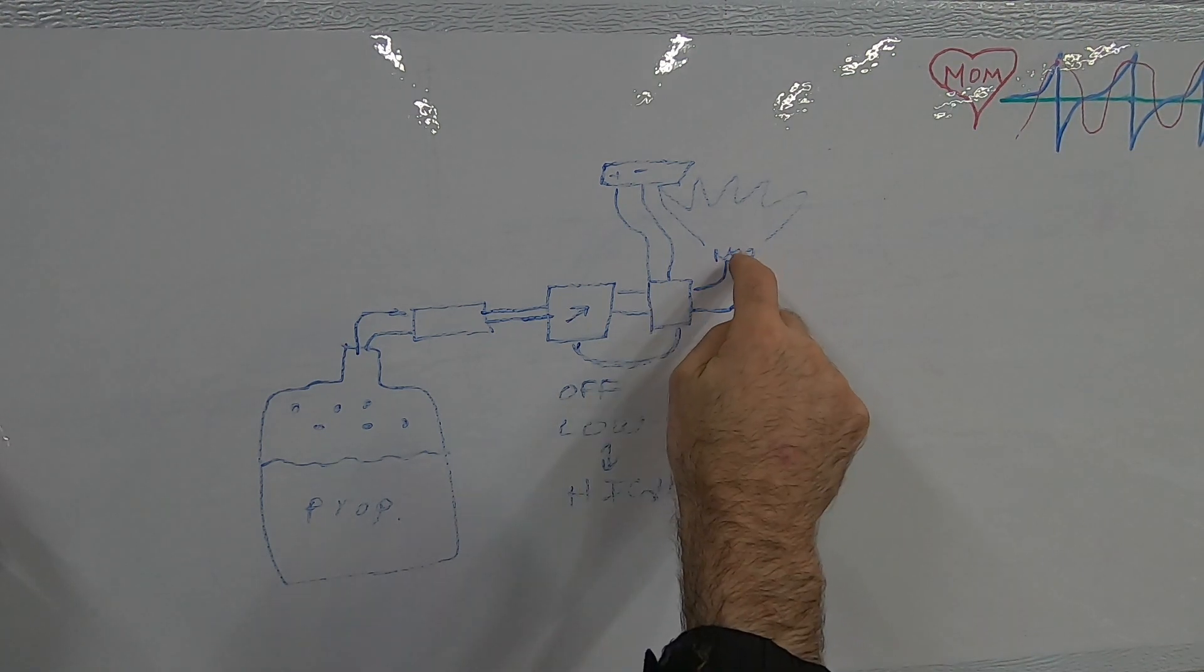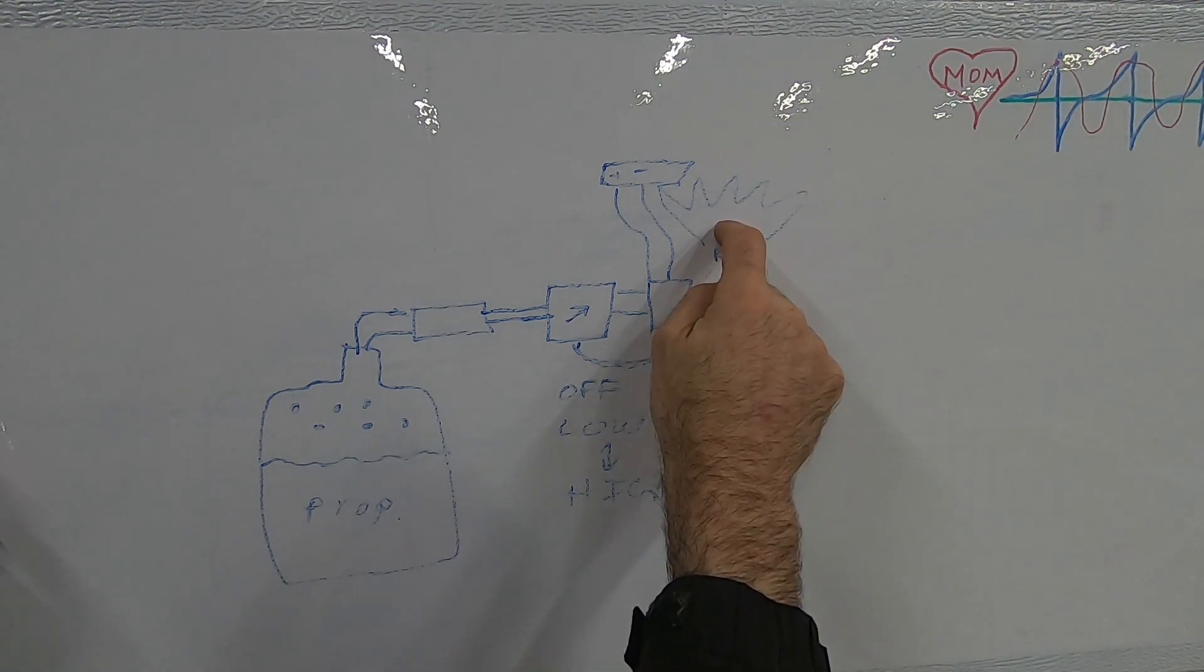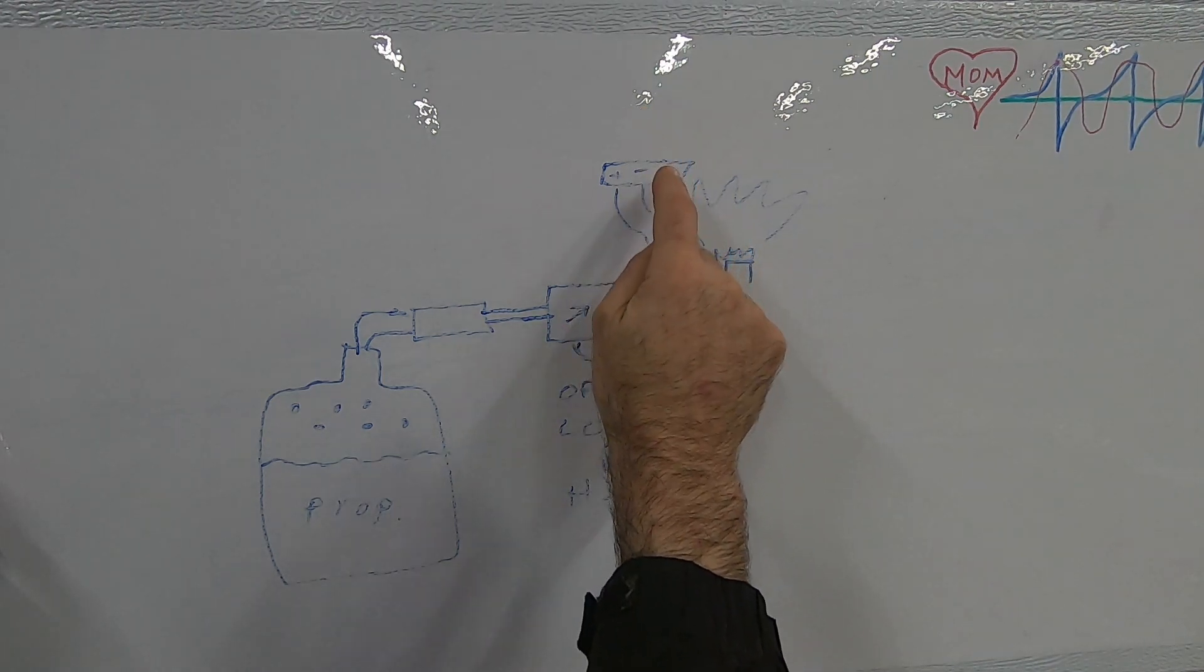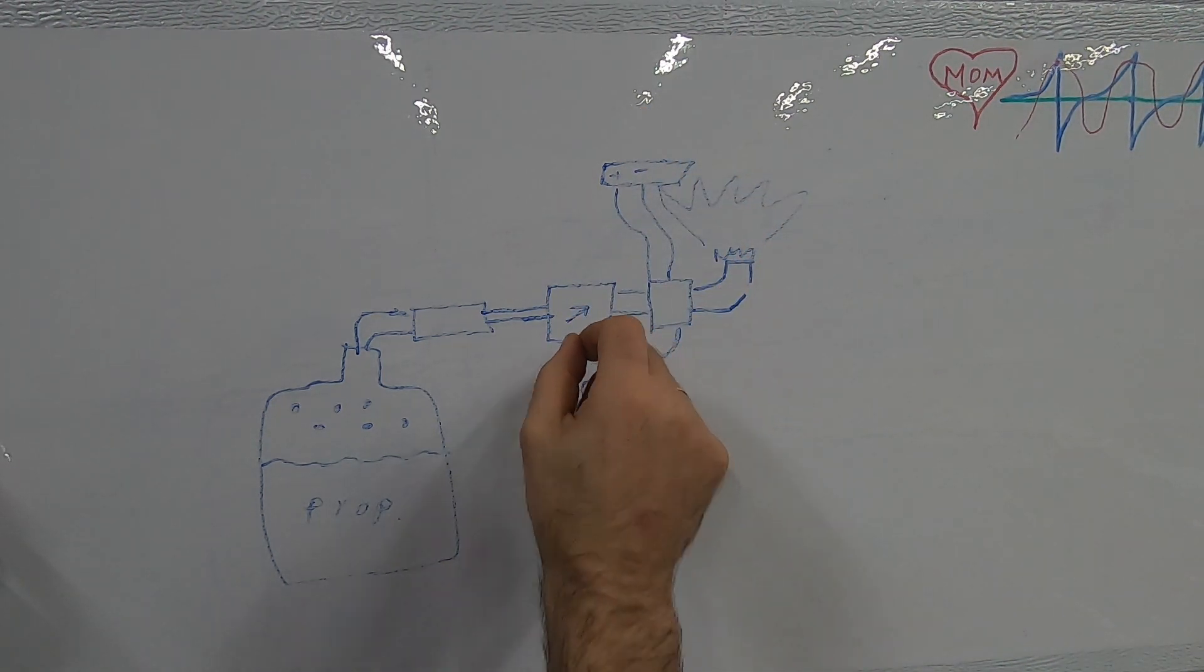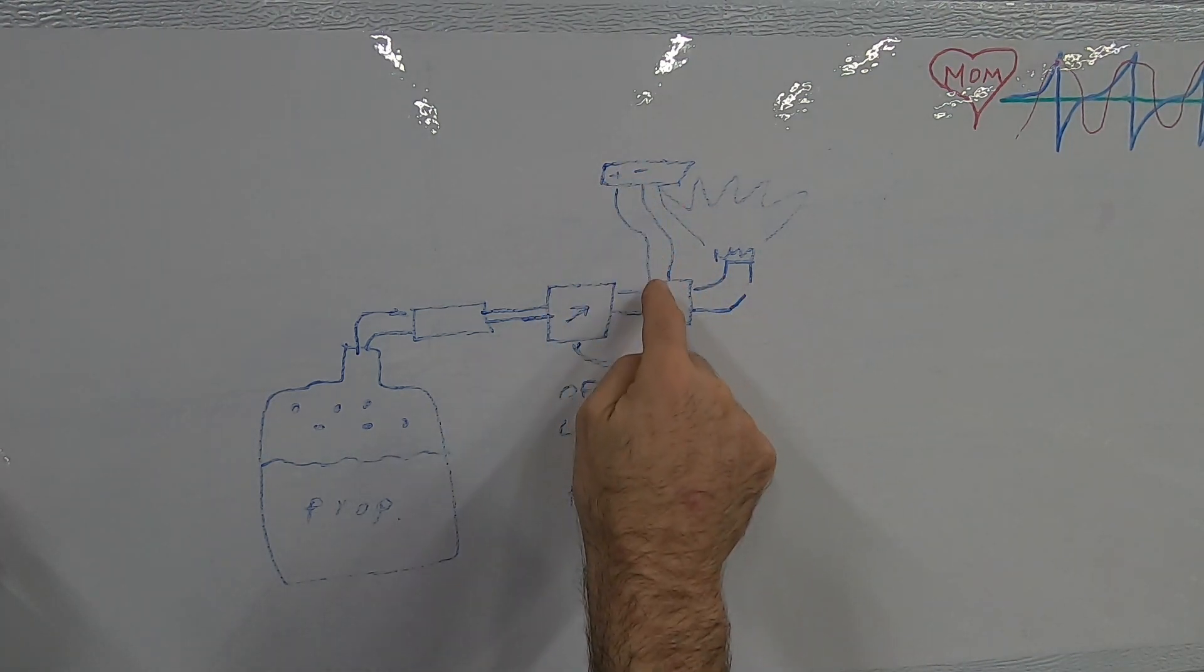And then when you release the knob, and it's spring loaded and releases, by that time there's enough electricity generated by the thermocouple to keep the valve open.